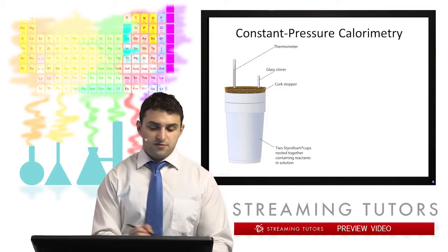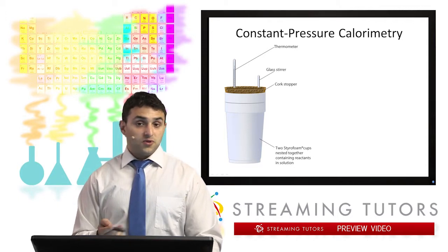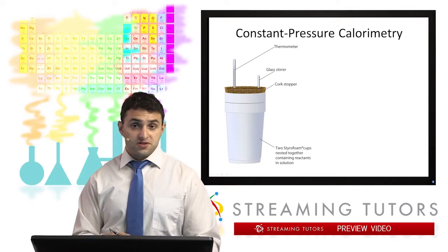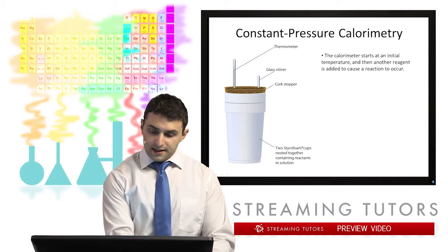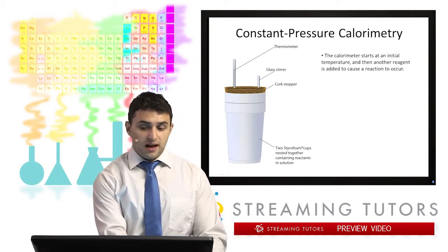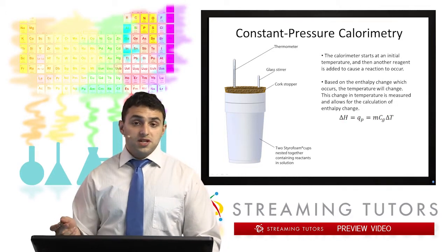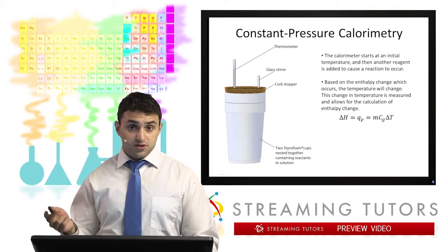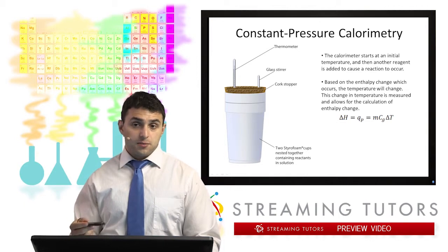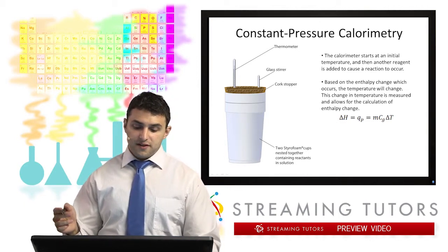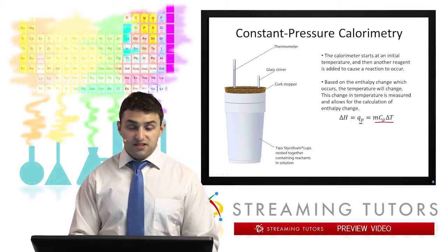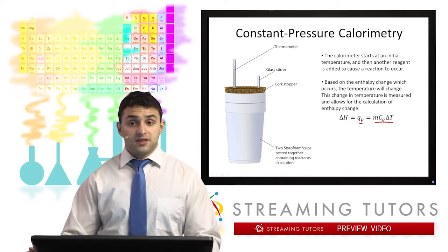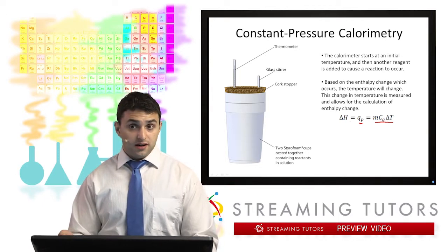For constant pressure calorimetry — you may have done this in high school — it's a very simple system. A simple constant pressure calorimeter is just some insulated styrofoam cups. You put your reaction inside the cups and have a thermometer reading the temperature. The calorimeter starts at an initial temperature, you add a reagent, a reaction occurs. The enthalpy change of the reaction determines what kind of temperature change you get: an exothermic reaction gives a temperature increase, an endothermic reaction gives a temperature decrease. We can quantify this with ΔH = Qp = mcΔT. Since this is a constant pressure system, the change in enthalpy equals the heat released.